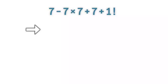So 7 times 7 is our first move, which equals 49. Now the expression becomes 7 minus 49 plus 7 plus 1 factorial.